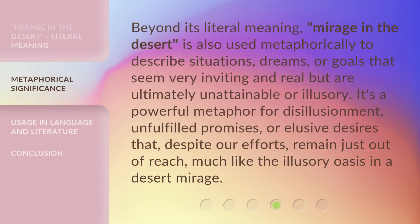Beyond its literal meaning, mirage in the desert is also used metaphorically to describe situations, dreams, or goals that seem very inviting and real but are ultimately unattainable or illusory. It's a powerful metaphor for disillusionment, unfulfilled promises, or elusive desires that, despite our efforts, remain just out of reach, much like the illusory oasis in a desert mirage.